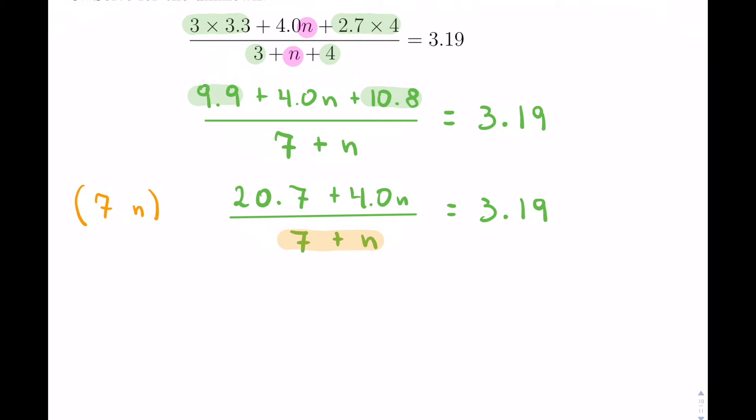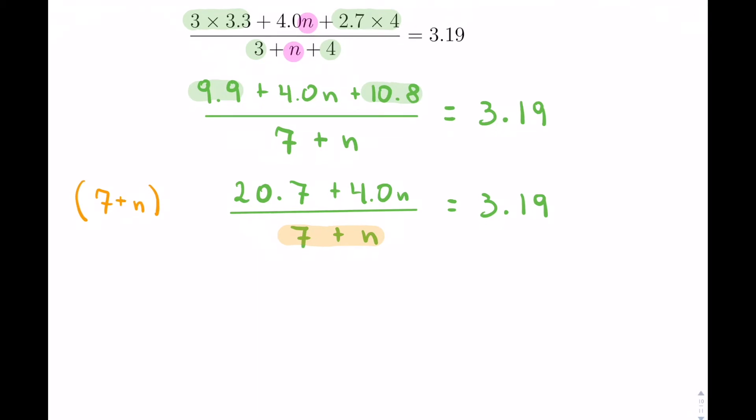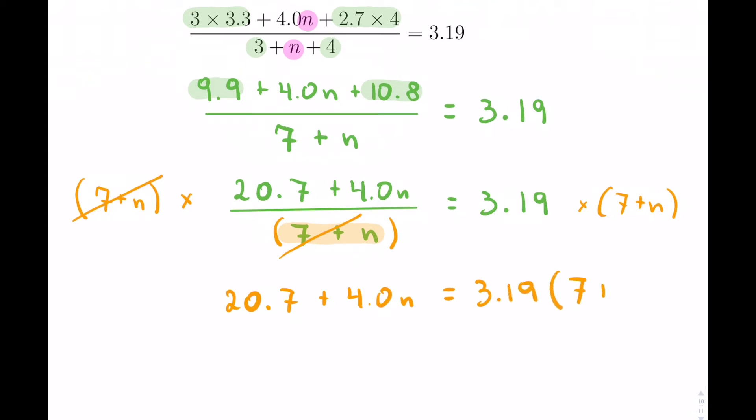If I multiply this side, I have to multiply the opposite side. Now what happens is that this 7 plus n will cancel off this 7 plus n right here. All you're going to be left with is 20.7 plus 4.0n equals 3.19 multiplied by 7 plus n.